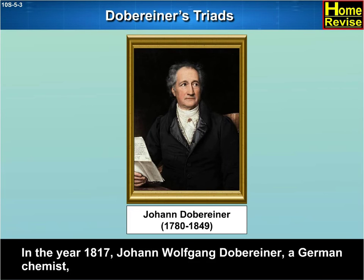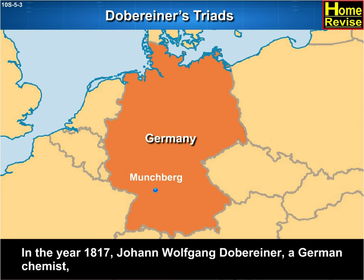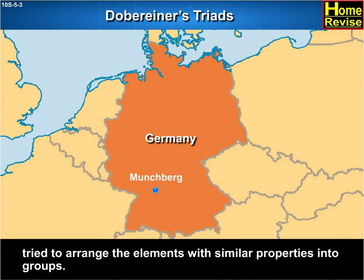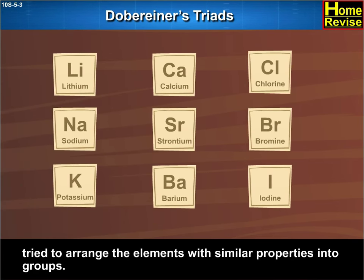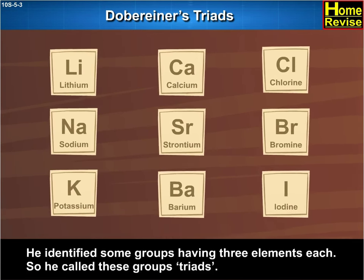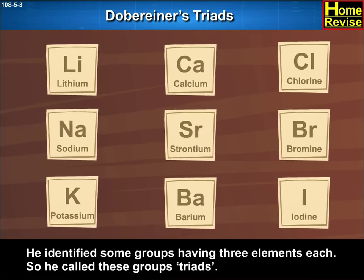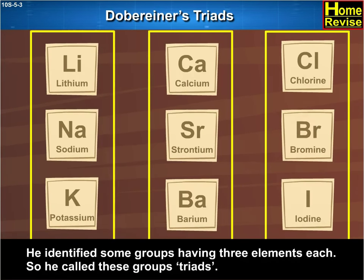In the year 1817, Johann Wolfgang Döbereiner, a German chemist, tried to arrange the elements with similar properties into groups. He identified some groups having three elements each, so he called these groups triads.